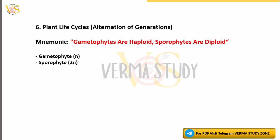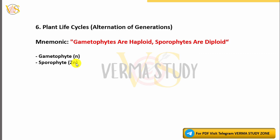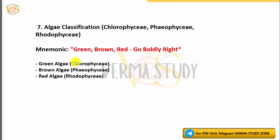6. Plant Life Cycles — Alternation of Generations Mnemonic: Gametophytes are haploid (N), Sporophytes are diploid (2N).